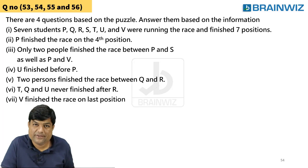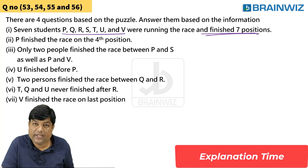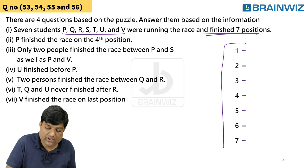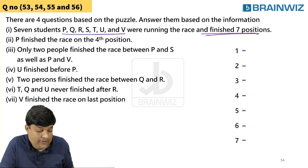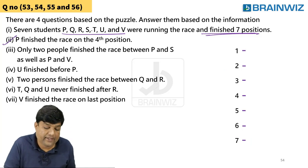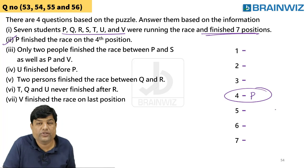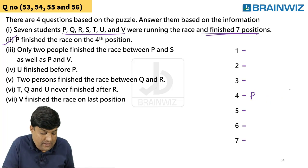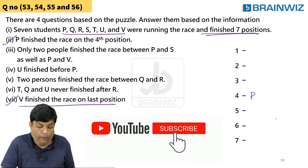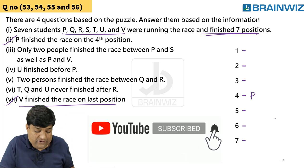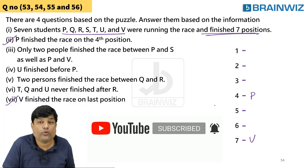Let's have an explanation of this question. There are seven people going in a race. We have kept the order — what is the arrangement that seven people are running the race. P finished the race on the fourth position. That's straightforward. V finished the race on the last position, so V is seventh. We have to read very carefully.